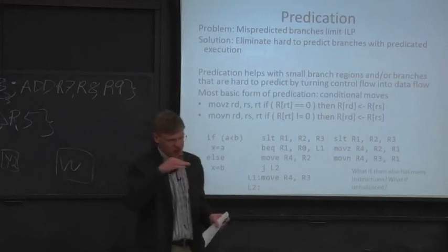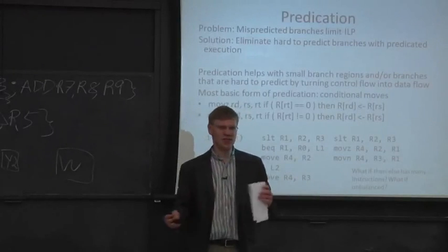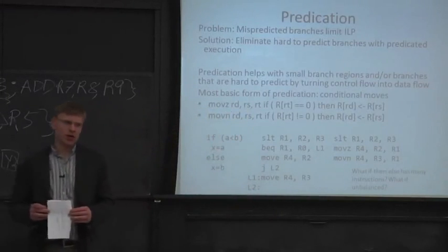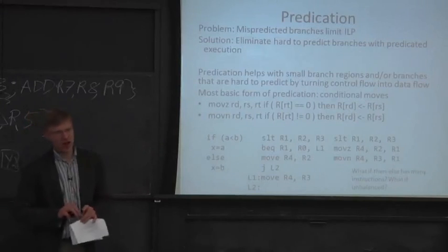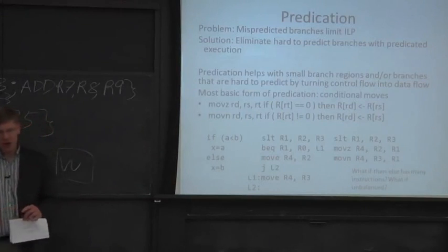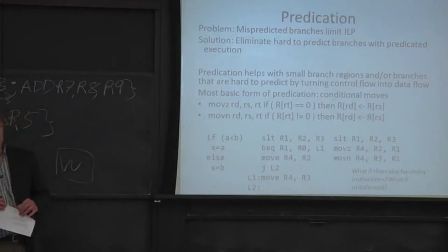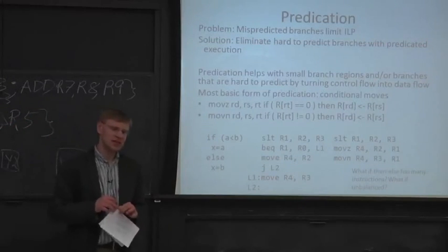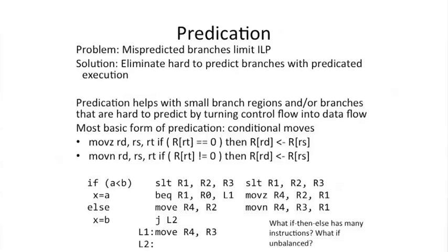OK, so now we're going to go through different problems with VLIWs and different solutions to those problems. The top one on this list is a problem of hard to predict branches and how that can limit instruction level parallelism. So you just remove the branch, and we're going to call that predication.